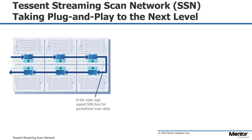The host nodes also generate the DFT signals locally — scan enable, scan clock, and so forth. Each node knows what to do and when to do it based on a simple configuration step done over JTAG. This means that the groupings of which cores are tested together, which are tested sequentially, and which cores are active — these decisions are not hardwired. They are fully configurable. The configuration is done as a one-time setup step per pattern set.